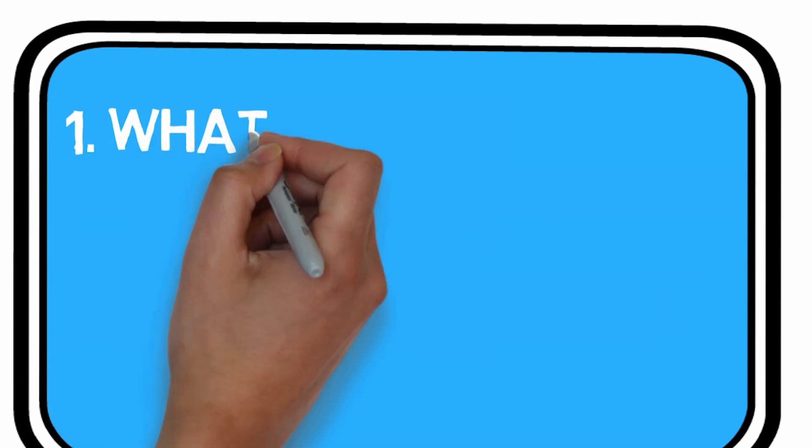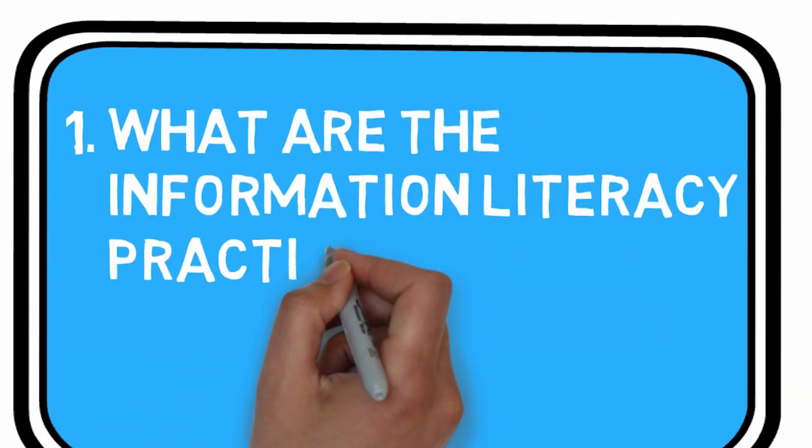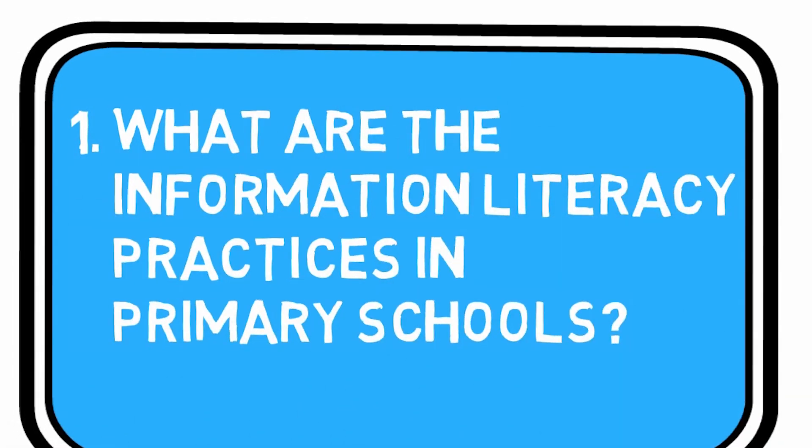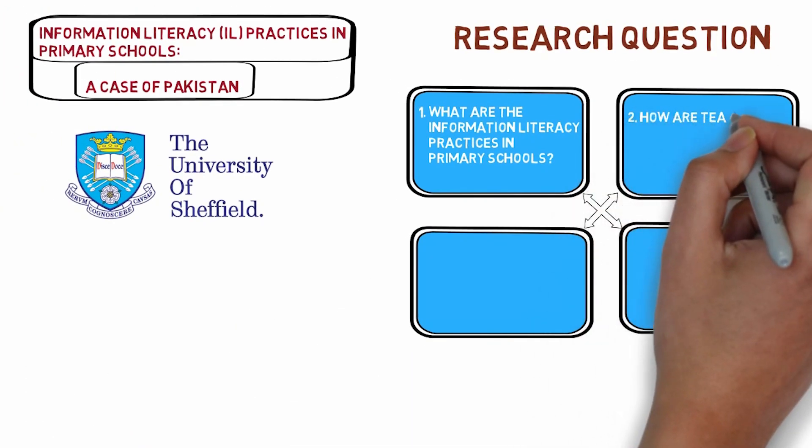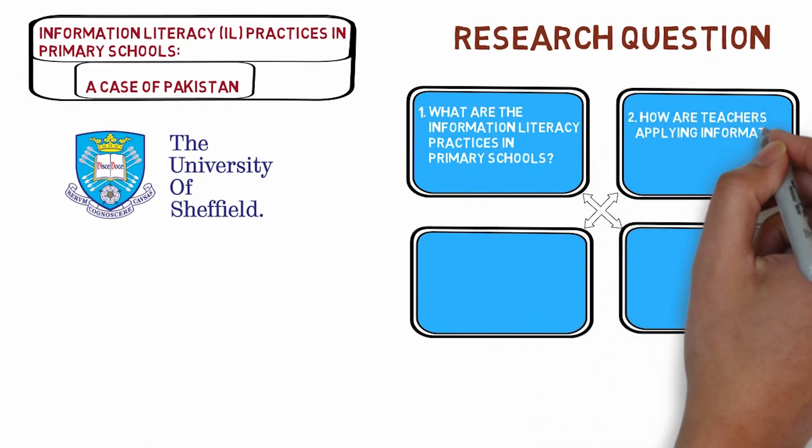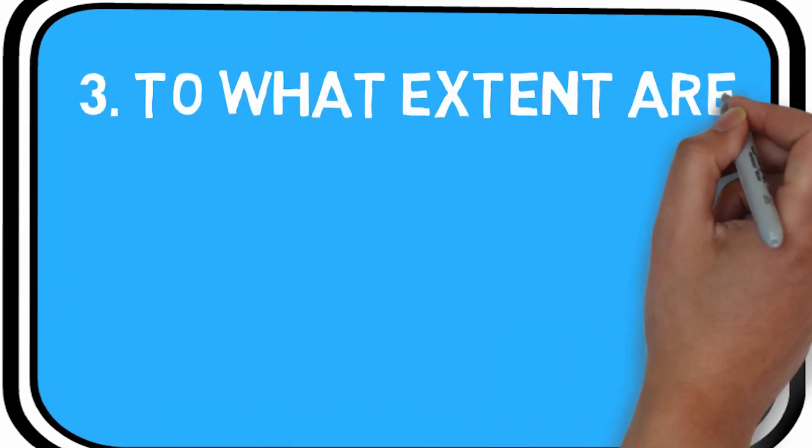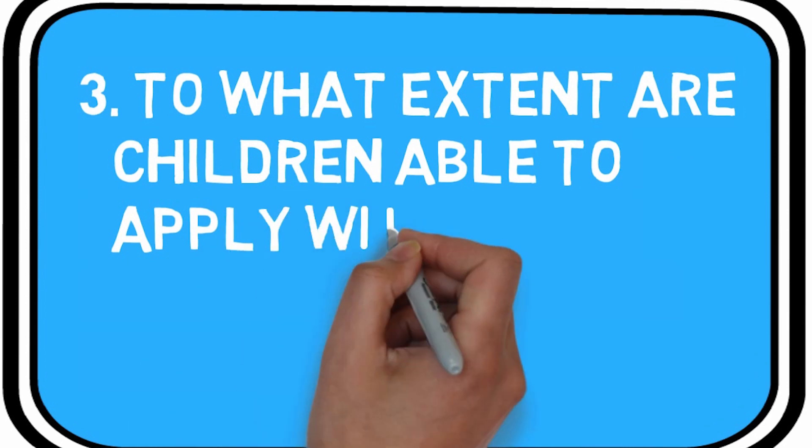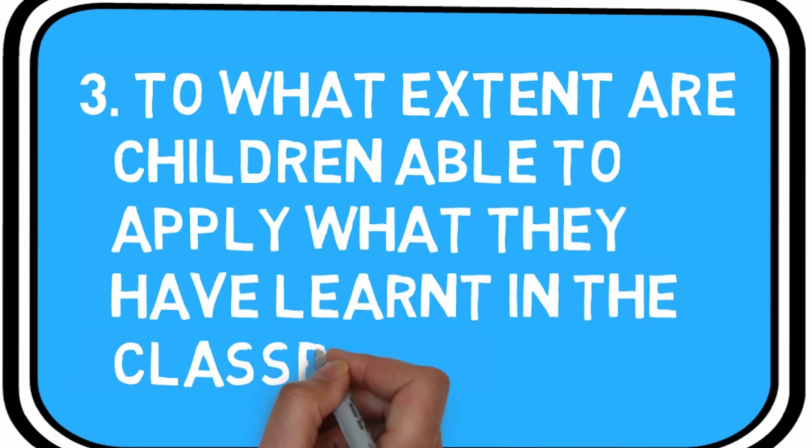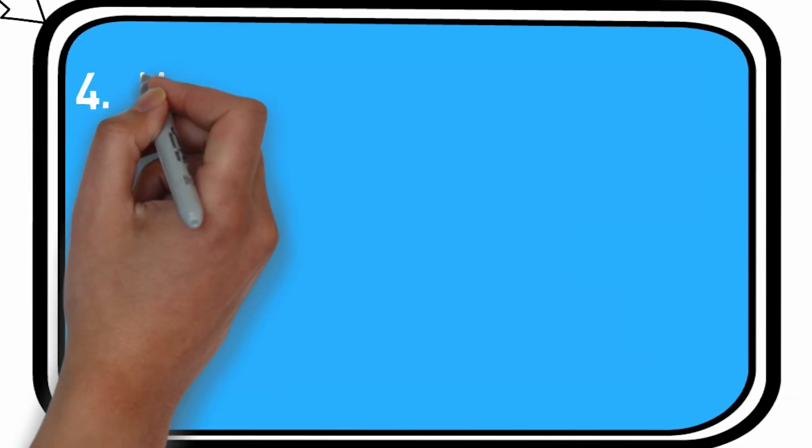Number one: What are the information literacy practices in primary schools? Number two: How are teachers applying information literacy in classrooms? Number three: To what extent are children able to apply what they have learned in the classroom?